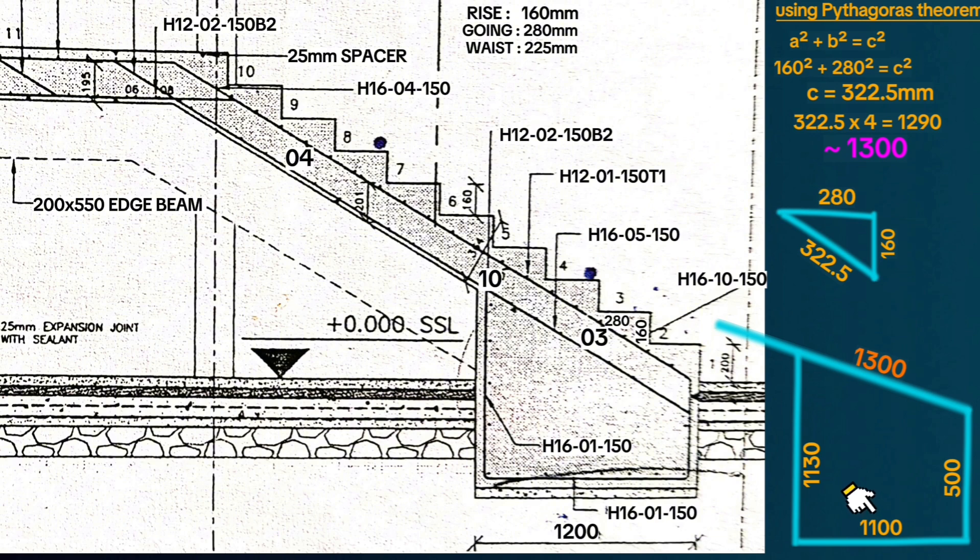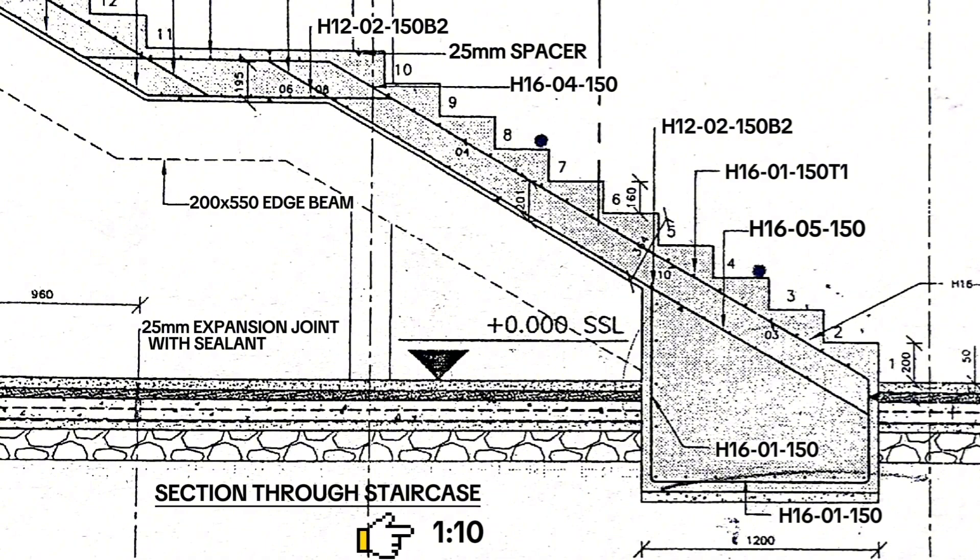In case you get confused when calculating for the cutting length in the staircase, just look at the scale down here below. For example, this is 1 in 10 on an A1 paper. It simply means that for 1 millimeter on an A1 paper, that is equal to 10 millimeters on the ground. Therefore, where things confuse you, simply get a ruler, make your measurement on the specified paper size and then multiply that by the scale.